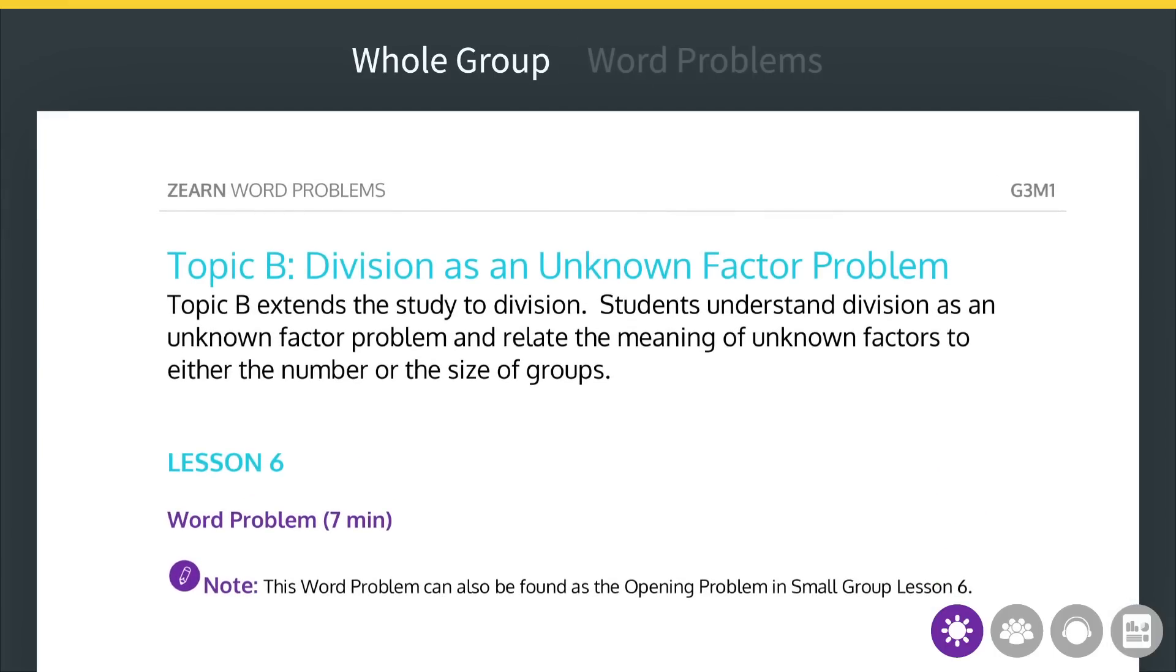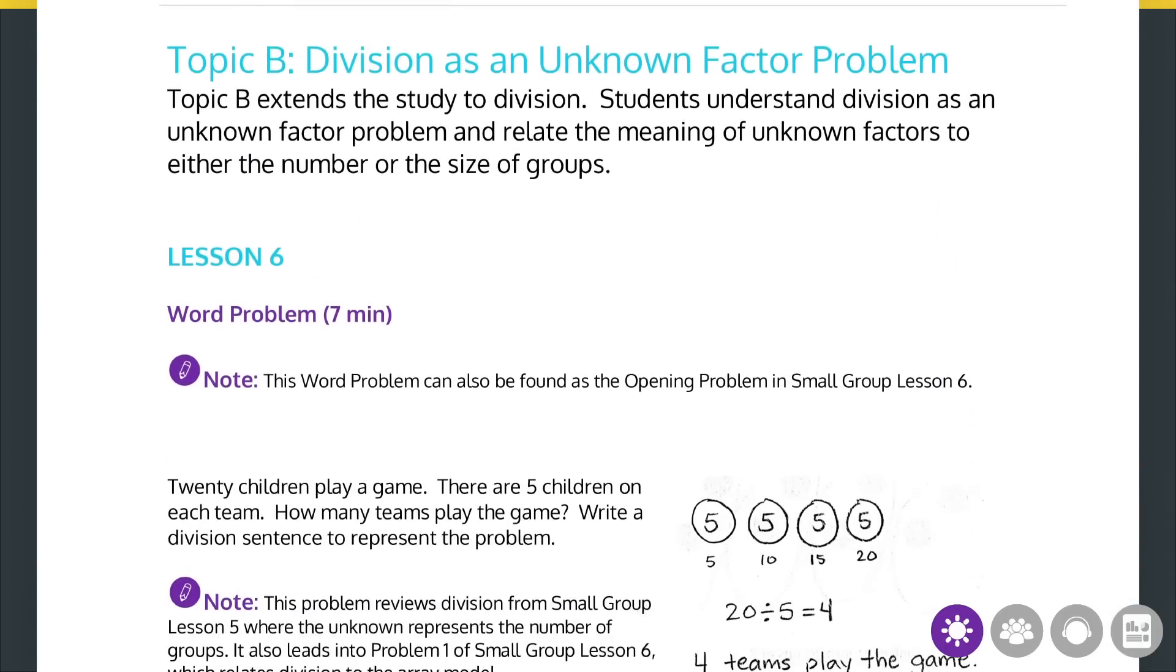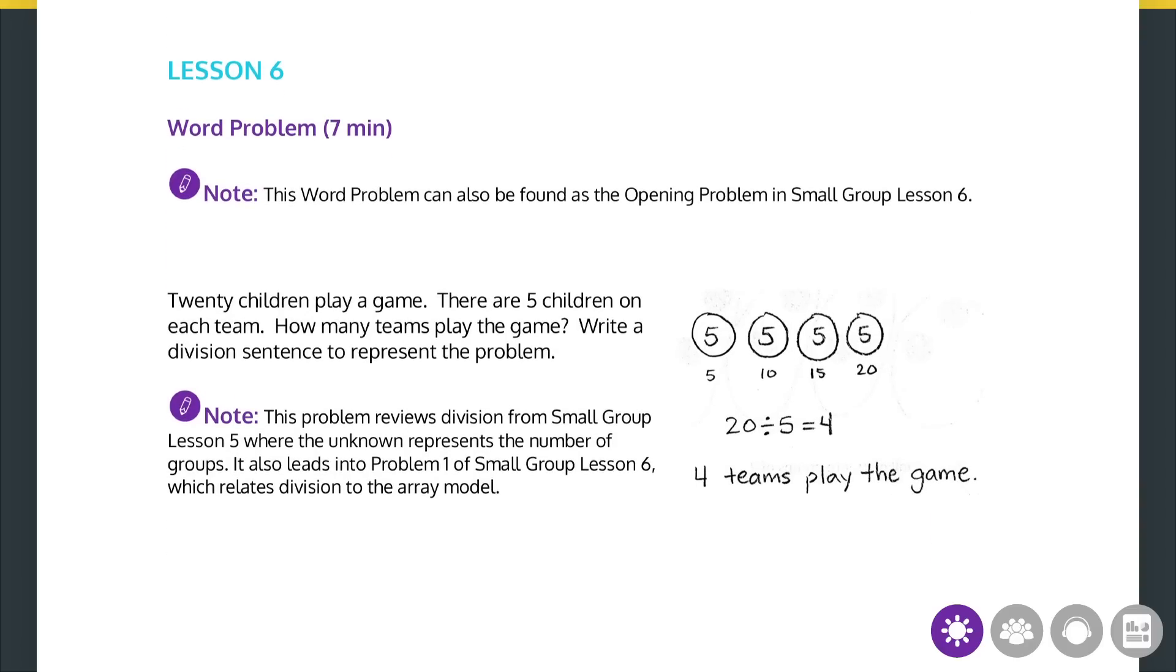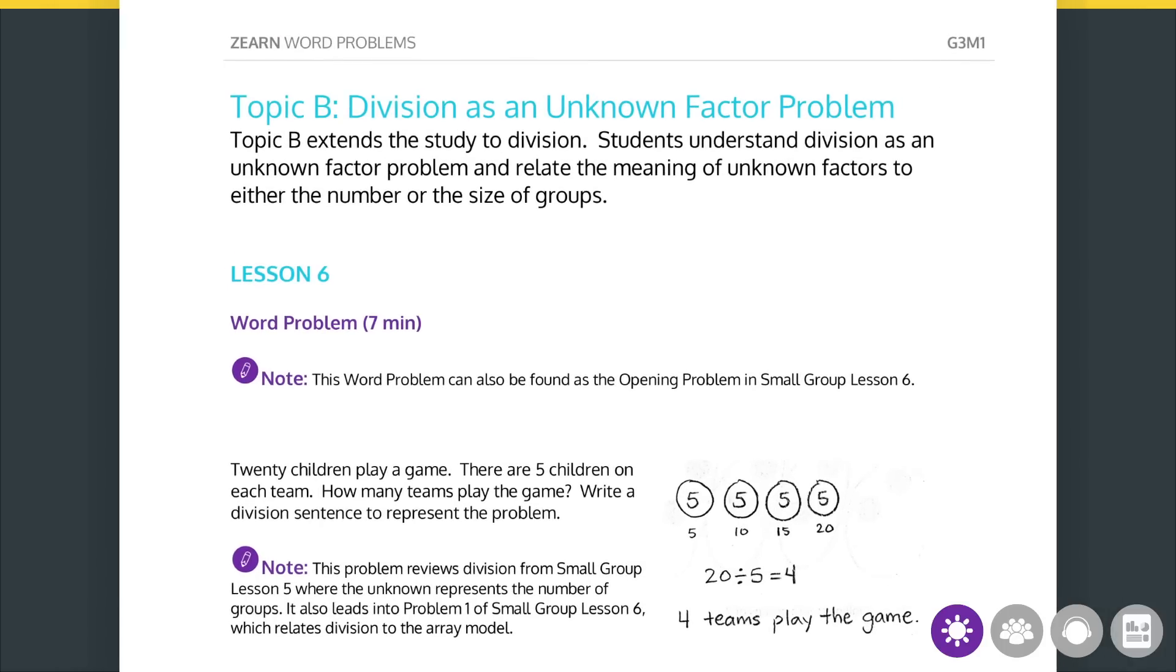Next, let's dive into a whole group word problem from the same lesson. For each problem, Zearn Math provides tips for teachers to help connect lessons to earlier work. Here, the materials highlight the review of division problems that bridge lesson 5 into lesson 6, where students relate division to arrays. The sample student work shows an abstract drawing of equal groups, but there are many different ways to solve the problem. The planning materials help teachers understand the range of representations they should expect to see.